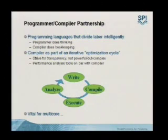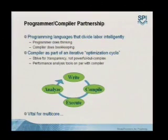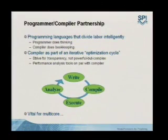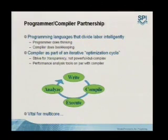Too often when you see a diagram of a compiler in a paper, it's illustrated as a linear flow — code goes in, optimized executable comes out. The reality is that for any application, there's a cycle: you write the code, compile it, execute it, analyze the performance, and iterate. The real objective of this programmer-compiler partnership is to reduce the number of times you have to go around this cycle to achieve your performance goal, and to make each iteration as fast as possible.